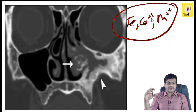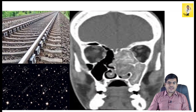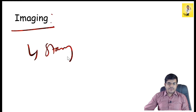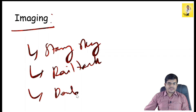Sometimes even bony erosion can occur due to expansion of the sinus walls. The characteristic CT features of AFRS are the double density appearance, the rail track appearance, or the starry sky appearance, which are seen due to the heterogeneous hyperdense areas within the hypodense areas — these are the radiological features of AFRS.